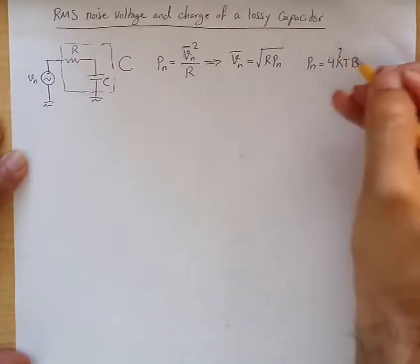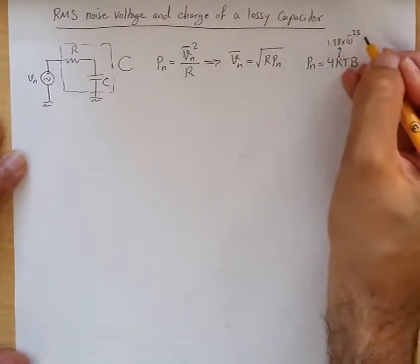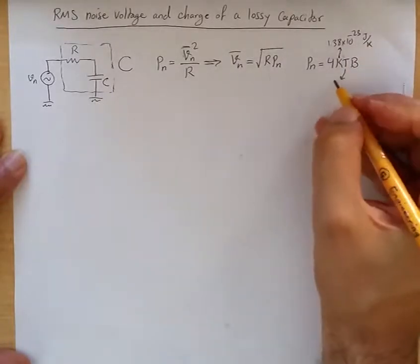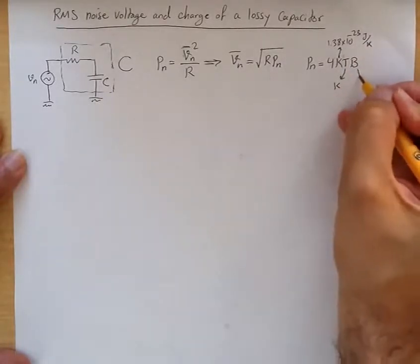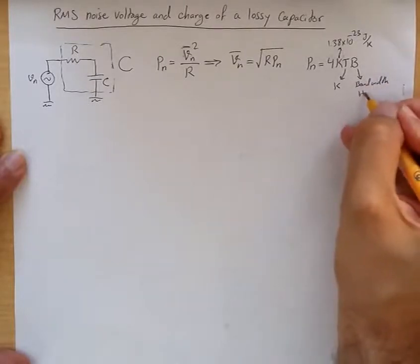K is Boltzmann constant, 1.38 times 10 to the minus 23 joule per Kelvin, and T is the temperature in degrees Kelvin. This is the bandwidth of interest in Hertz.